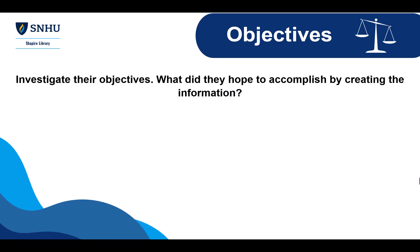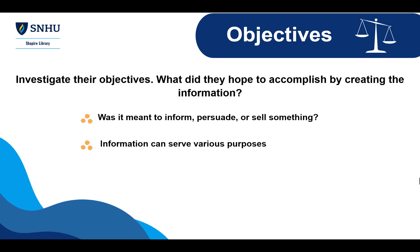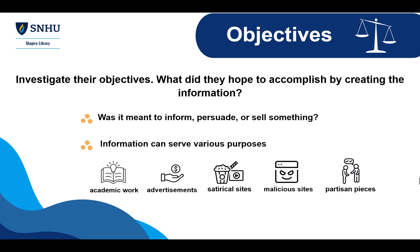The next step is to investigate their objectives. What did they hope to accomplish by creating the information? Was it meant to inform, persuade, or sell something? Information can serve various purposes: academic work aims to broaden understanding, advertisements seek to sell, satirical sites entertain, malicious sites deceive, and partisan pieces persuade or reassure. Understanding their purpose helps you find potential biases or hidden agendas behind the information. Ask yourself why this information was created and consider how it might affect its trustworthiness.